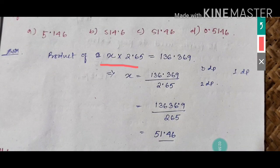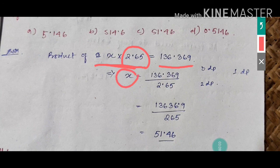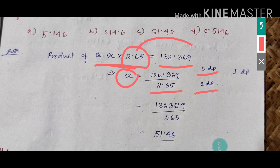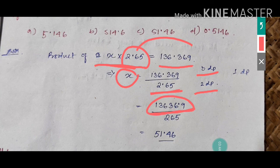Let the unknown number be x. So x multiplied by 2.65 equals 136.369. Bring 2.65 to the denominator — numerator has three decimal places, denominator has two decimal places, so three minus two equals one. Write 136.369 shifted to one decimal place as 1363.69, and the denominator 265. Now apply division — forget the decimal point while dividing, then adjust the quotient. You will get 51.46.